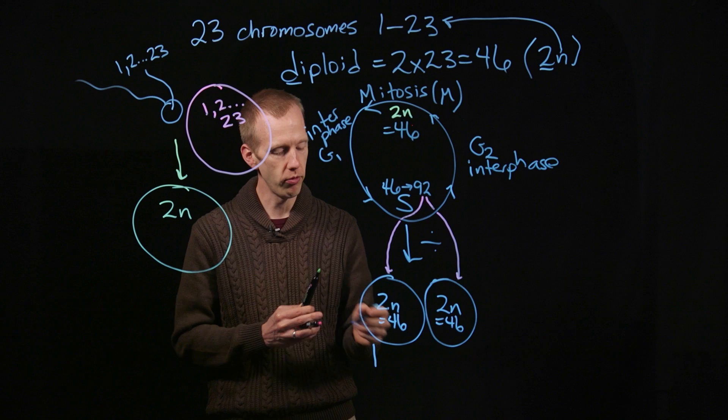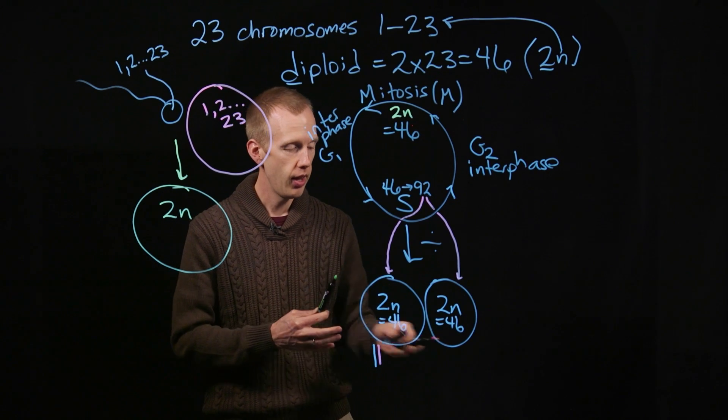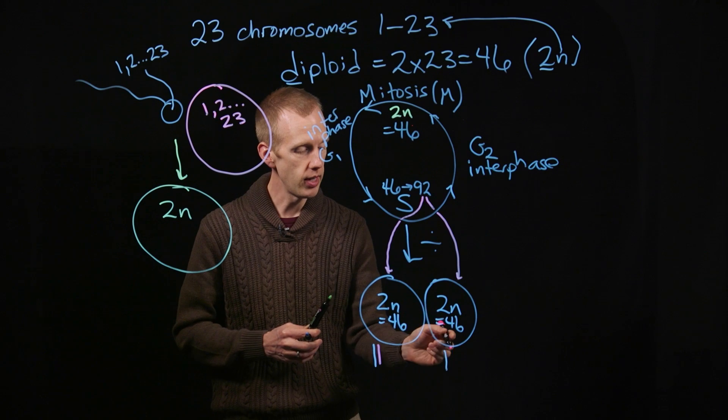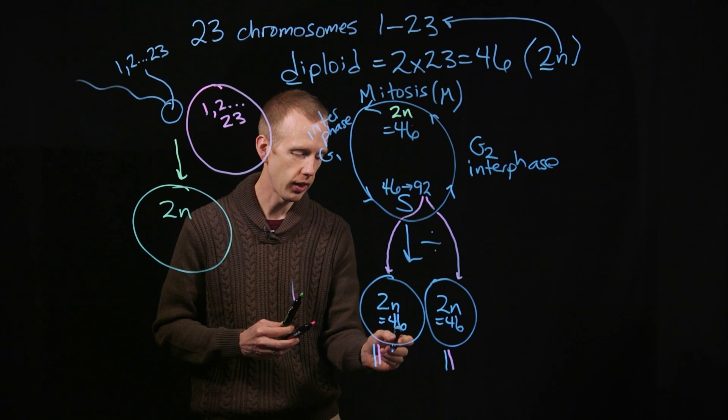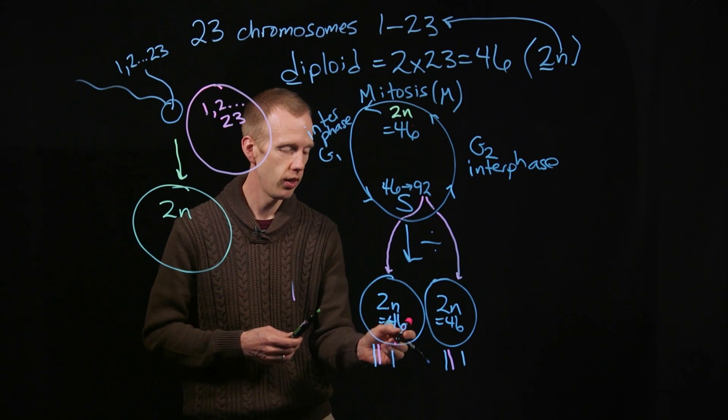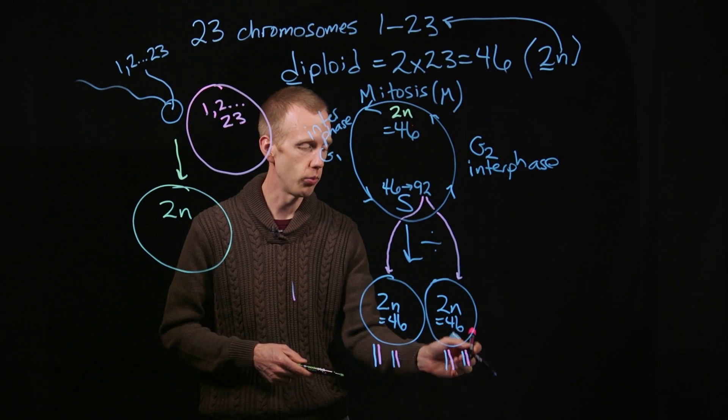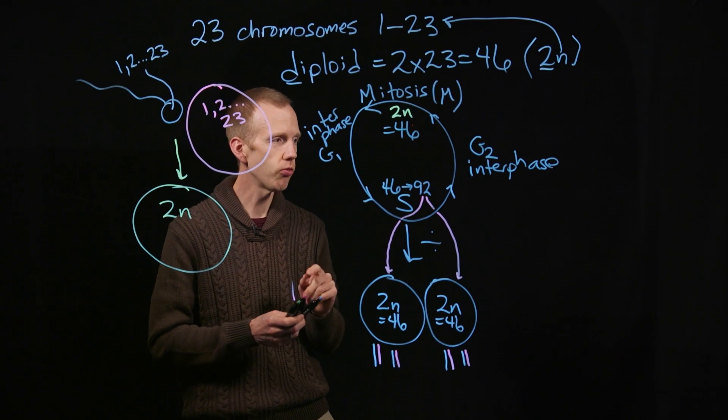One copy of chromosome 1 from dad, one copy of chromosome 1 from mom. And there are those in each of those two daughter cells. And then we can move on to the second chromosome. There's a second copy of chromosome 2 from dad in each of those cells, and a second copy of chromosome 2 from mom in each of those cells.